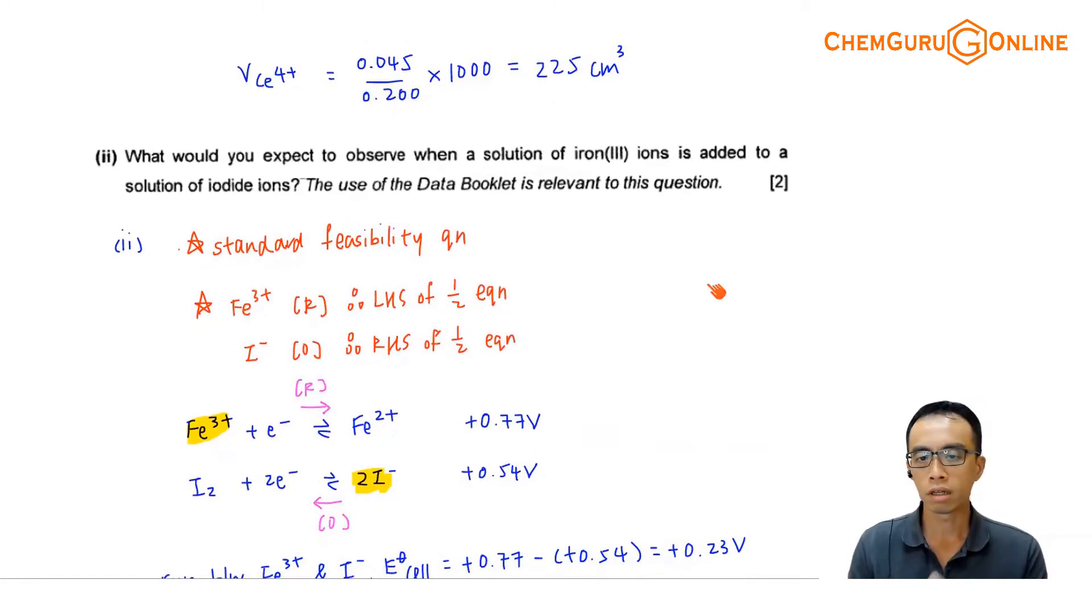Even if they give us a salt, maybe like iron 3 nitrate, we should be able to deduce which is the species that will be taking part in the redox reaction. That means the other ion, the counter ion, should be something relatively stable, maybe like iron 3 sulfate. Sulfate is stable. It will not be involved in the redox reaction. We can ignore that. I only need to focus on iron 3 plus.